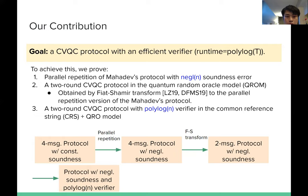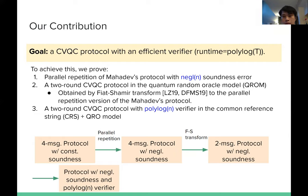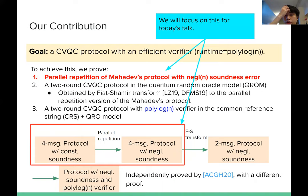Finally, we have a two-round CBQC protocol with polylog verifier in the common reference string model. To summarize, we start from the four-message protocol with constant soundness — Mahadev's protocol — and then we do a parallel repetition, which gives us a four-message protocol with negligible soundness. Then we do a quantum Fiat-Shamir transform, which gives us a two-message protocol with negligible soundness. Finally, we consider a common reference string model and get a protocol with negligible soundness and polylog verifier. Because of time constraints, in this talk I will focus on the first part: parallel repetition of Mahadev's protocol with negligible soundness.